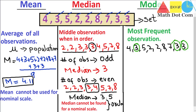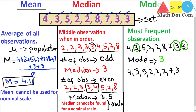An important thing to note is that it is not necessary for a data set to have only one mode. There can be no mode, one mode, or multiple modes. You may have heard the word 'bimodal,' which means there are two modes in the data set. For example, if we rewrite the data set as 4, 3, 5, 2, 2, 2, 7, 3, 3 — the mode changes. Now both 2 and 3 each occur with a frequency of 3, so this data set is bimodal with two modes: 2 and 3.